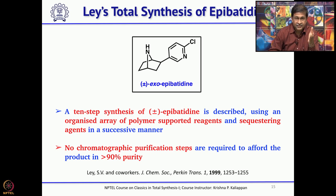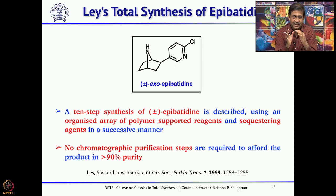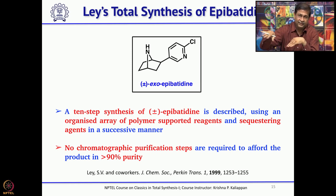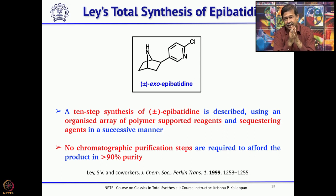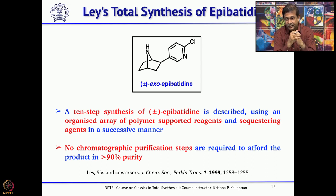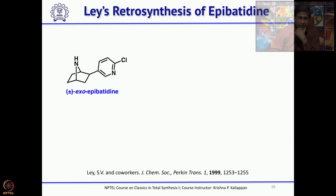Just filter and remove the solvent, then go to the next step — it is very easy if you use polymer-supported reagents. Because of this purification-less synthetic route, polymer-supported reagents are well known. This total synthesis was based on an intramolecular SN2 reaction as the key step. The nitrogen acts as the nucleophile and the leaving group is set up so that the intramolecular SN2 reaction will give the bicyclo[2.2.1] system.